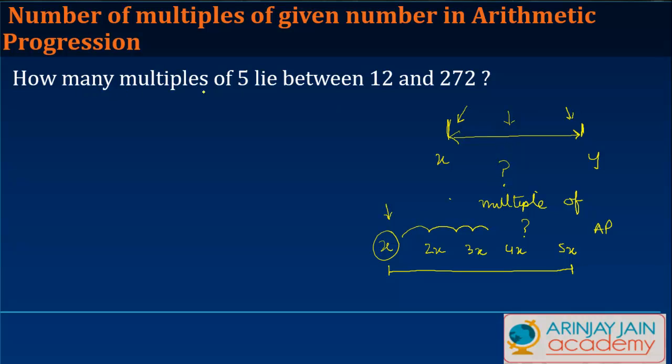Let's see how. How many multiples of 5 lie between 12 and 272?